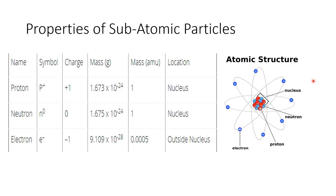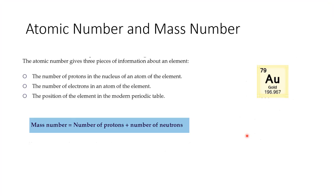This is the atom, and this is how scientists went about figuring out its structure — a discovery that is still ongoing today. The subatomic particle information of any particular element is shown on the periodic table of elements. Take the example of gold. The number 79 is called the atomic number, and it gives three pieces of information: the number of protons in the nucleus (79), the number of electrons in the atom (79), and the position of the element in the periodic table — gold is the 79th element.